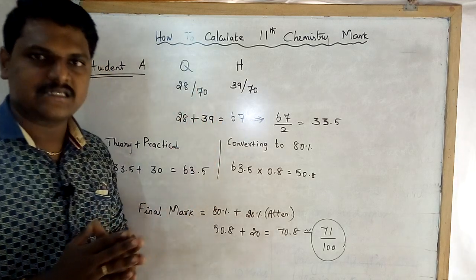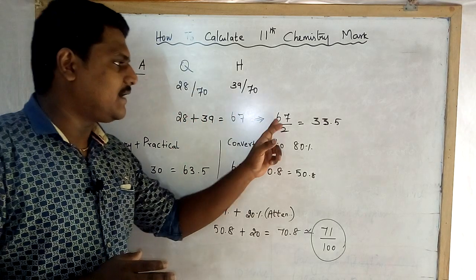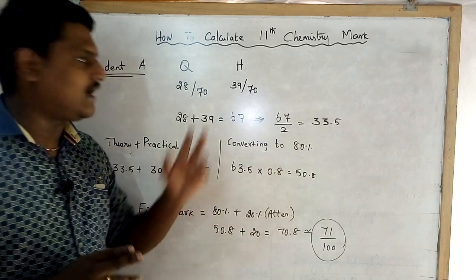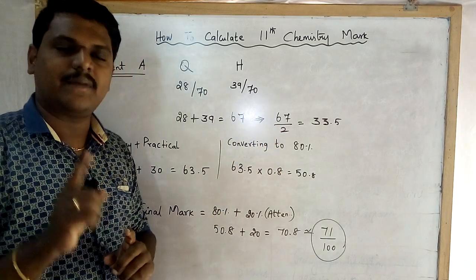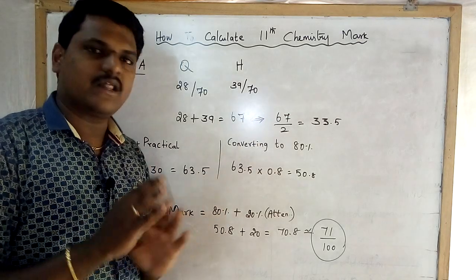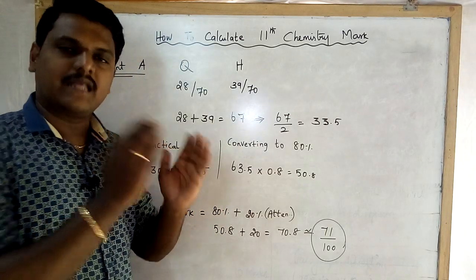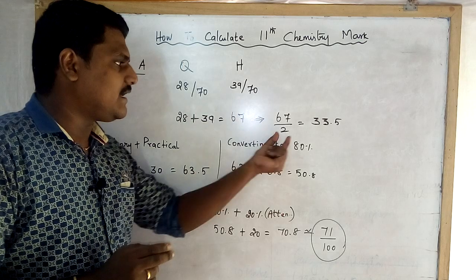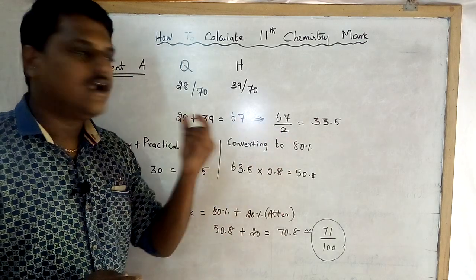Add the 2 marks — quarterly and half-yearly. Add 2 and divide by 2 to find the average.